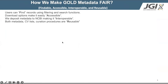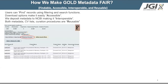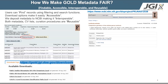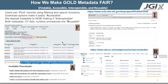How do we make our curated metadata FAIR? FAIR stands for Findable, Accessible, Interoperable, and Reusable. GOLD's searches and filters make our curated metadata easily findable. GOLD's download files make our metadata easily accessible to our users. We deposit our curated metadata to NCBI, making it interoperable between different resources. Other resources source data from GOLD, making our metadata and the curation processes reusable.